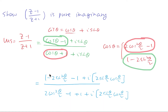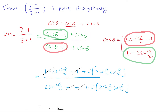And we can see the plus 1 and minus 1 all get cancelled. The leftover terms all have a factor of 2, so the 2s get cancelled as well. We're just left with minus sine squared(θ/2) plus i sine(θ/2) cos(θ/2).